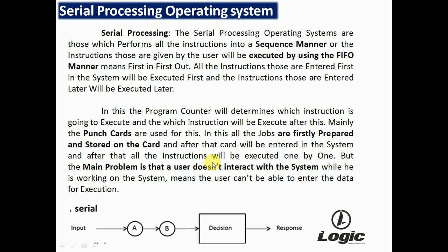In serial processing, punch cards are mainly used. All jobs are first prepared and stored on the card, then the card is entered into the system and all instructions are executed one by one. The main problem is that the user cannot interact with the system while it is working.